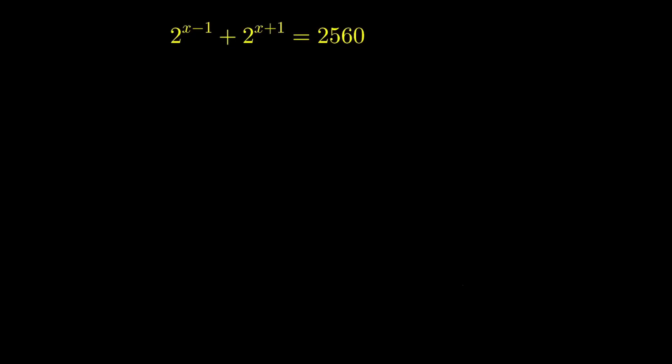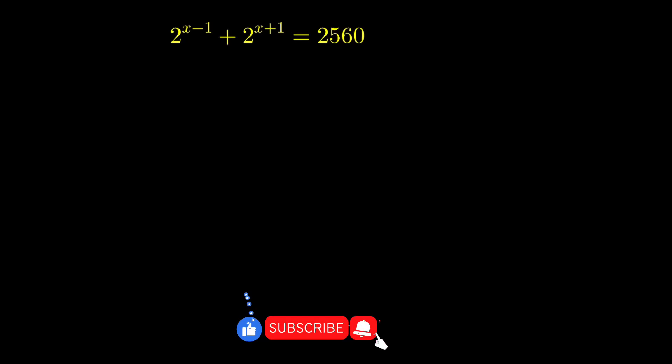Hello everyone. In this video we are going to solve this given exponential equation: 2 raised to the power x minus 1, plus 2 raised to the power x plus 1, is equal to 2560. There are two methods to solve this equation.